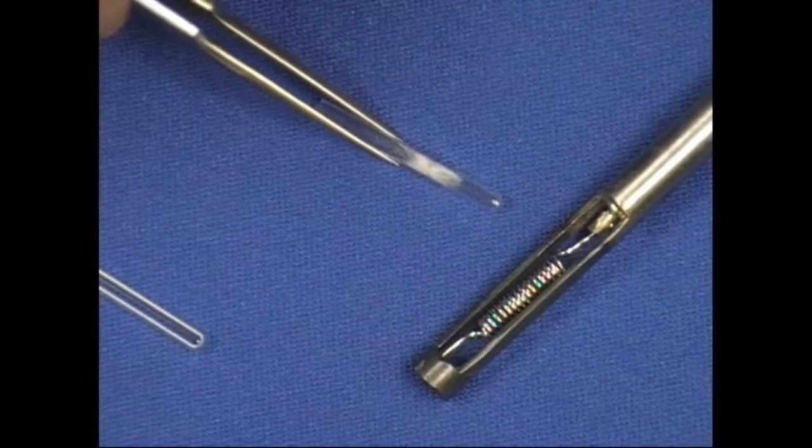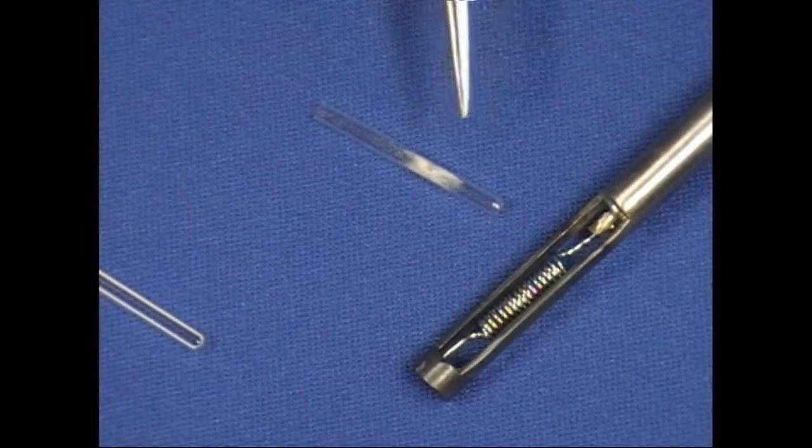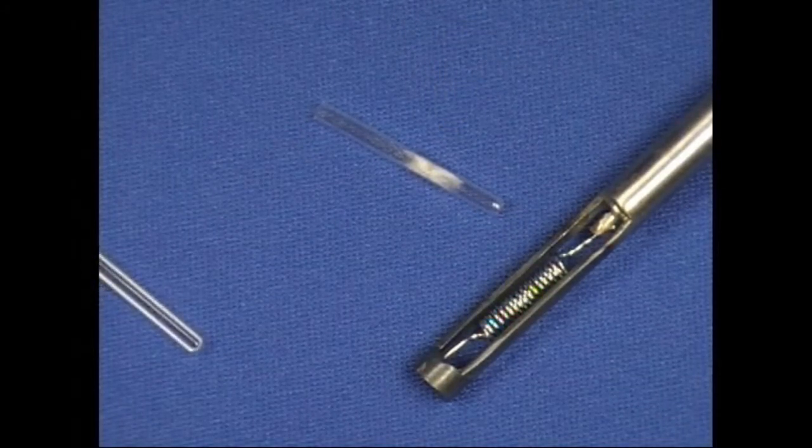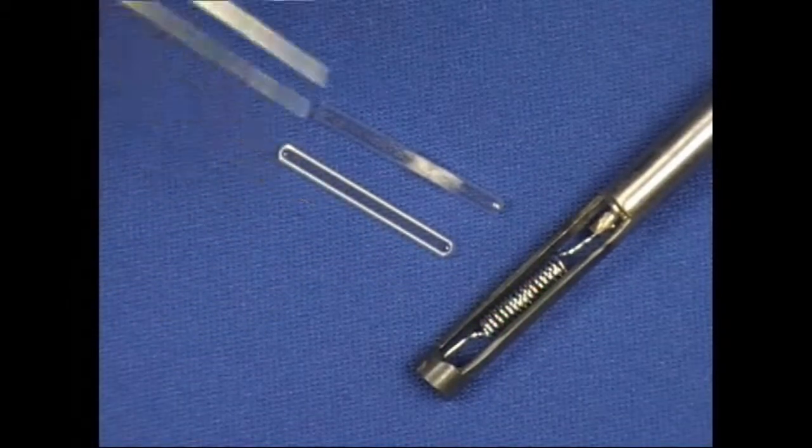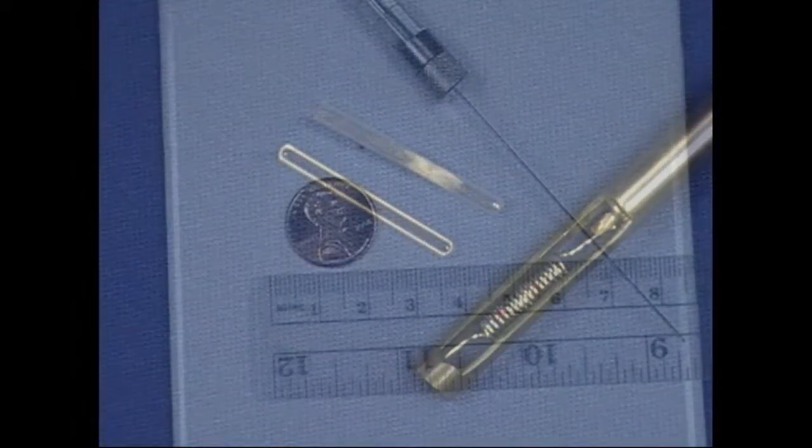The quartz tubes look like this. They generally have some quartz wool in them to hold the sample in place, and the quartz boat is like a little canoe made out of quartz, and you can put a liquid sample directly into that.